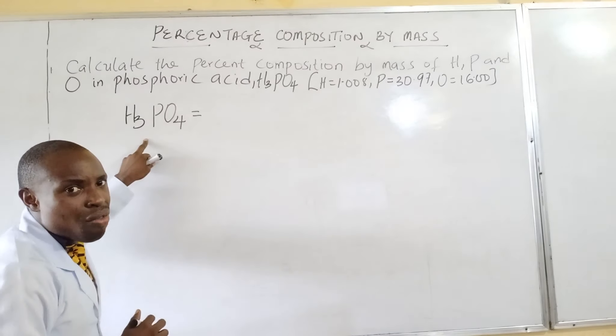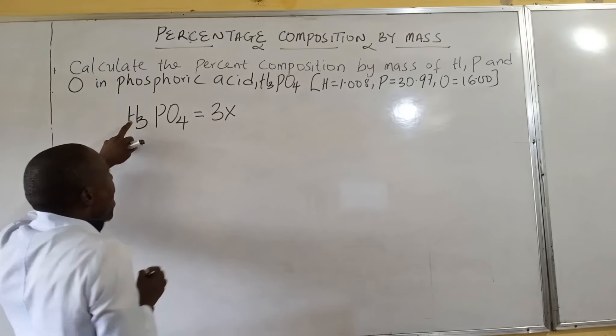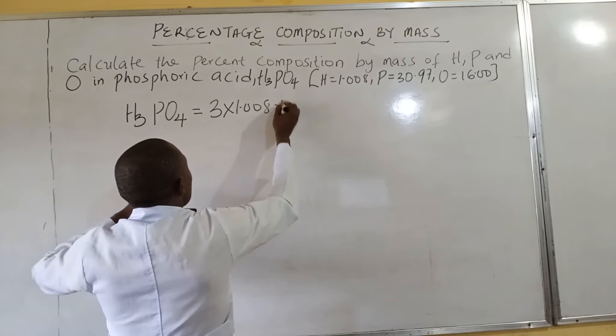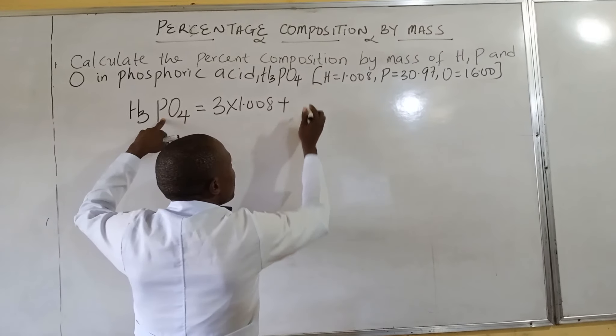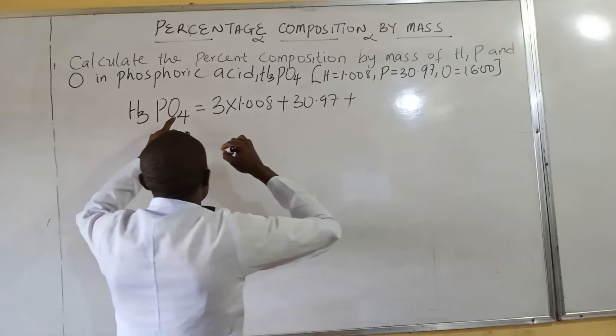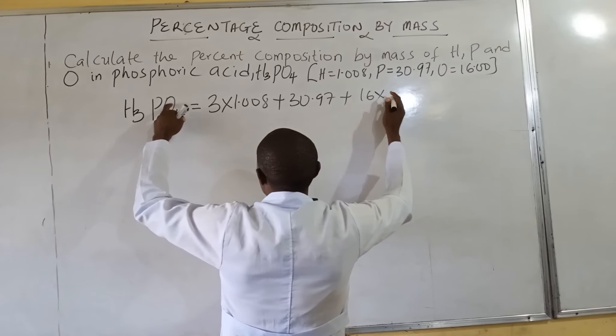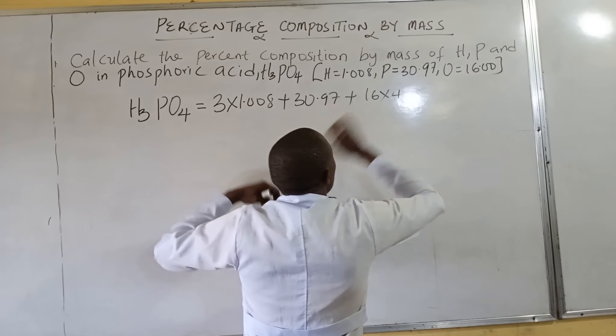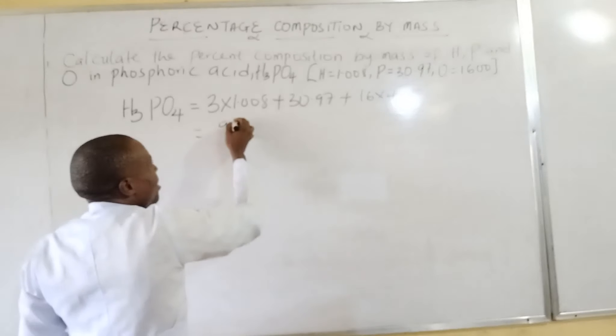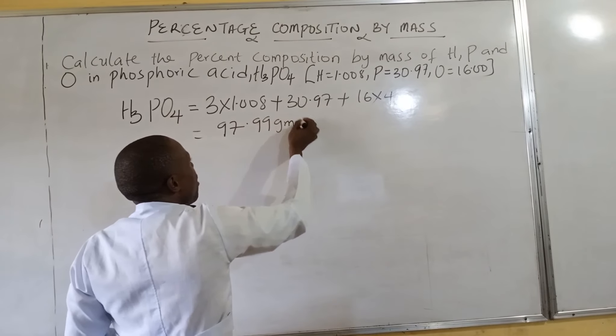The number of atoms of hydrogen here is 3, so 3 multiplied by the atomic mass of hydrogen, which is 1.008, plus phosphorus, which is 30.97, plus oxygen, which is 16 times 4. All together, we have 97.99 grams per mole.